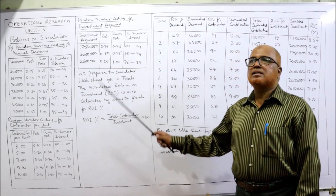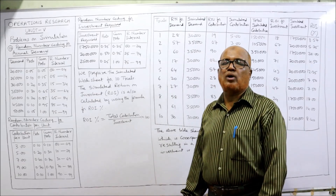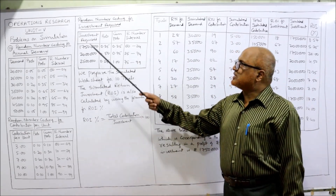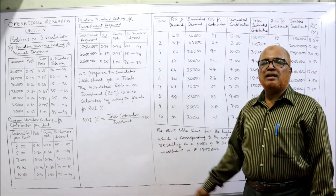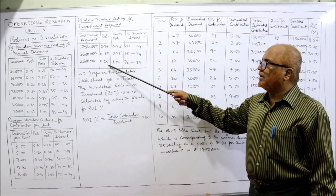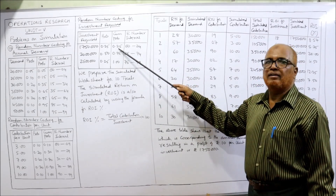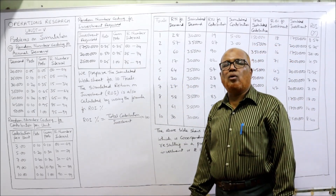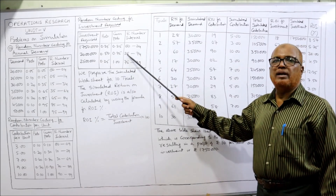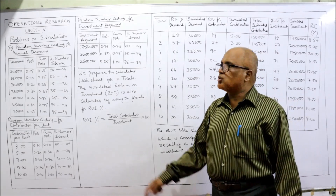Lastly, the random number interval for investment required. Three investments are given: 17 lakh 50 thousand, 20 lakh, and 25 lakh, with given probabilities. The cumulative probabilities give intervals: 00–24 for 17 lakh 50 thousand, 25–74 for 20 lakh, and 75–99 for 25 lakh.